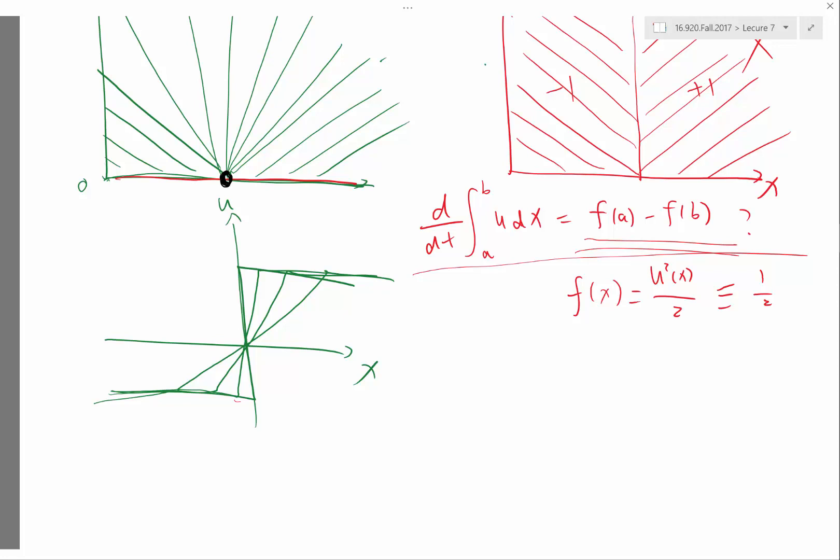So shock waves should only exist when the characteristics run into the shock wave, which means they are trying to make the shock wave sharper. If the characteristics that emanate from the shock wave are trying to make the shock waves smoother, disappear, then the shock wave should not exist.